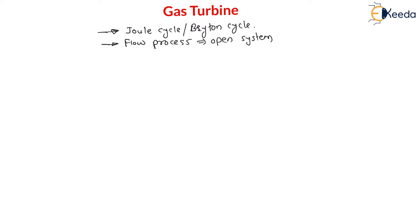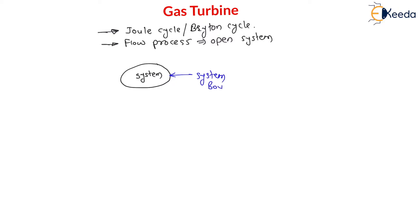A flow device or open system: here there is a system. The area enclosed by the system is the inside space, which is the system, and the outside space is the surrounding. Now the system is anything under consideration. If there is both mass as well as energy interaction across the system boundary, then it is called an open system. Energy can enter into or leave the system, and mass can also enter into or leave the system.